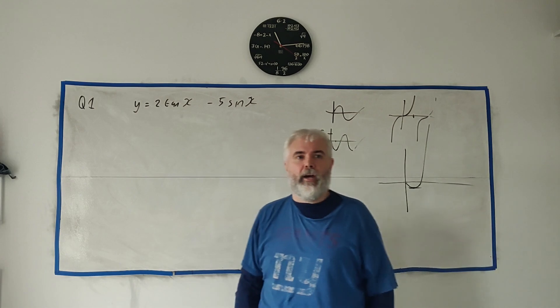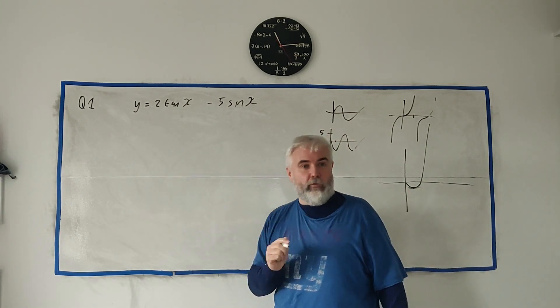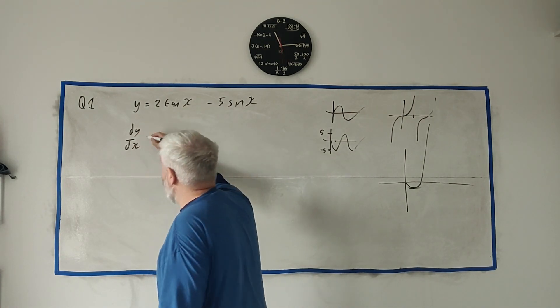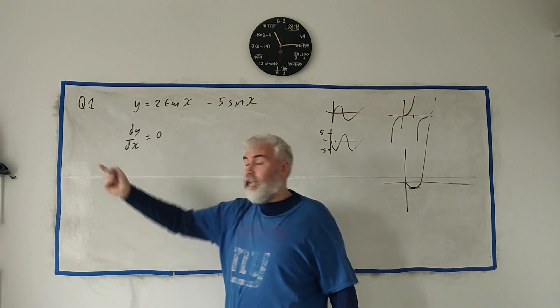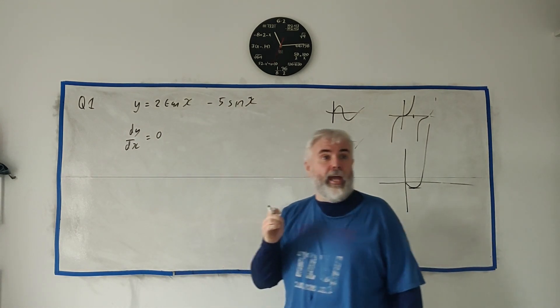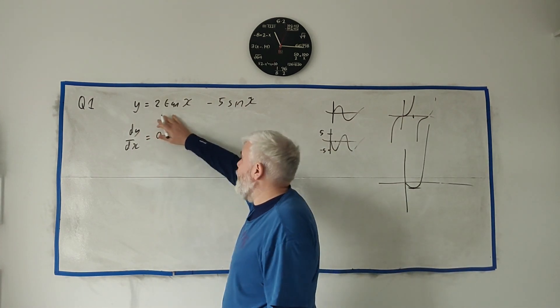So how do we find stationary points? You need to be thinking differentiation—dy/dx, and more specifically dy/dx equals zero. You get a mark just for writing that without doing any other work. Just tell them derivative equals zero.